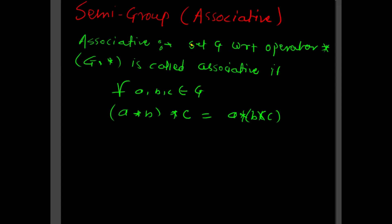Last lecture we studied the closure property. This lecture we are going to study the associative property. Any set and operator that satisfies the associative property is called a semi-group. The semi-group is required to satisfy the associative property, so let us understand what the associative property is first.